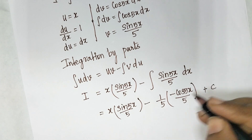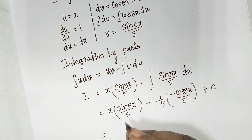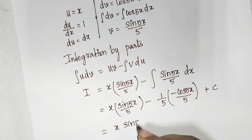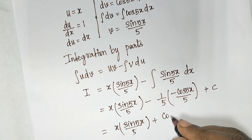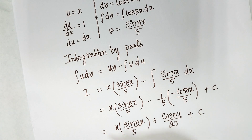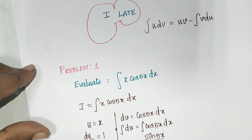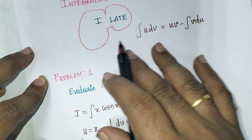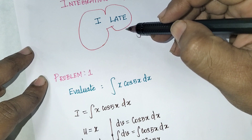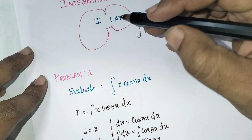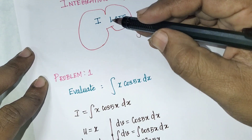Simplifying, the final answer is x·sin(5x)/5 plus cos(5x)/25 plus C. This is the final answer. Always remember ILATE: I for inverse, L for logarithmic, A for algebra, T for trigonometric, E for exponential — this is the preference method for selecting u.